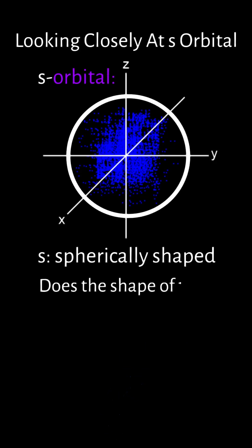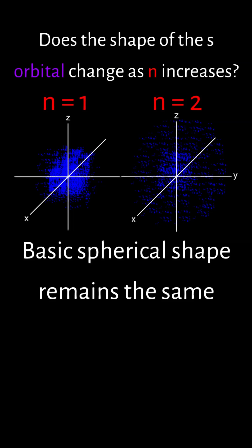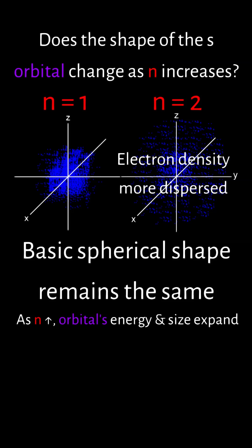But does the shape of the s-orbital change as n increases? While the basic spherical shape remains the same, as the principal quantum number n increases, the orbital's energy and size expand. Consequently, the electron density becomes more dispersed, enlarging the sphere and increasing the likelihood of finding the electron farther from the nucleus.